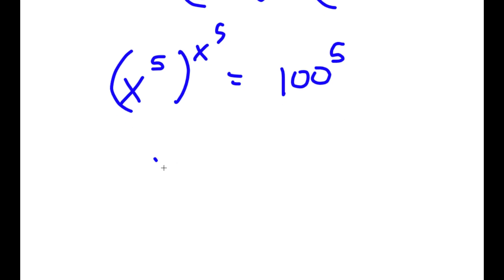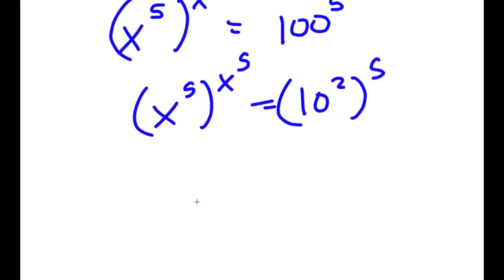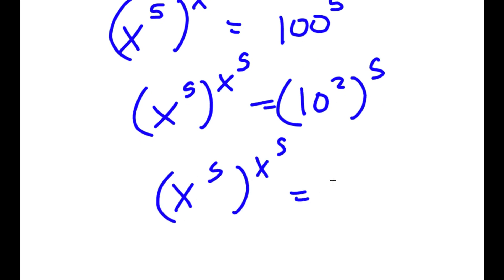Now 100, I'm going to rewrite that as 10 squared. So I have x to the power of 5 to the power of x to the power of 5 is equal to 10 squared to the power of 5, which simplifies to x to the power of 5 to the power of x to the power of 5 equals 10 to the power of 10.